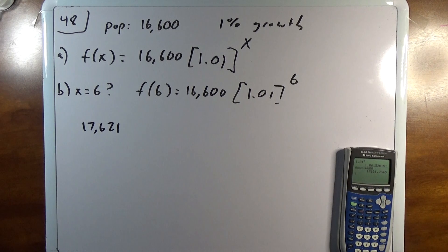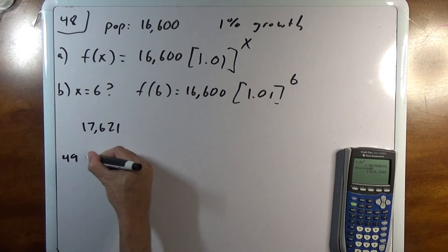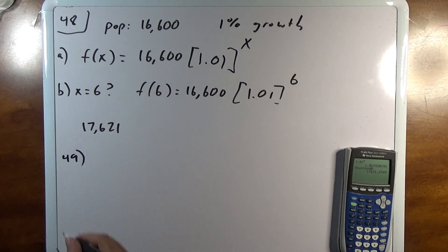So even though I have like 0.2345, it doesn't make sense to include that or to round up. So most cases with population, you'll just truncate or round down. All right, 49.